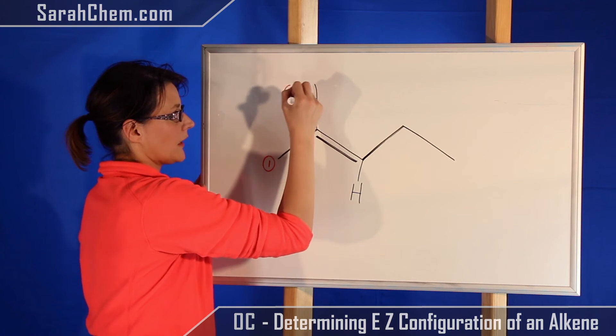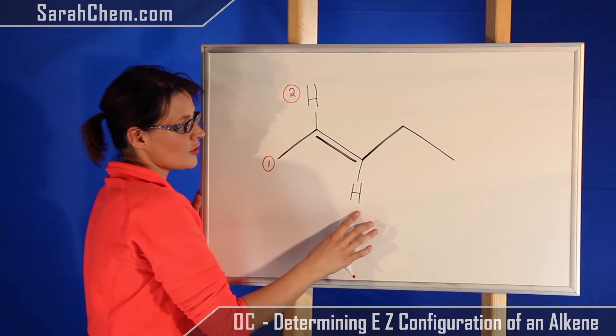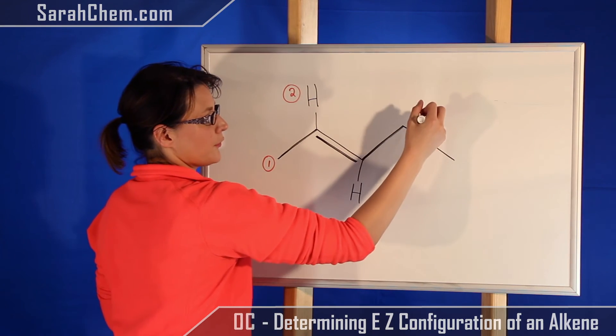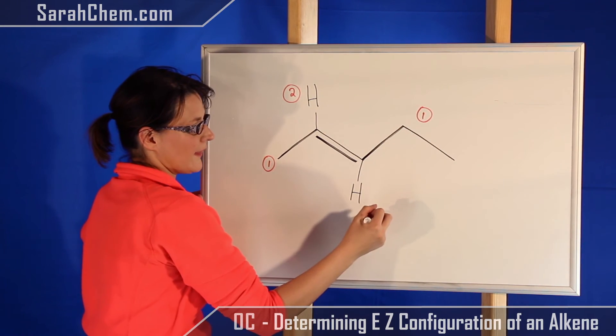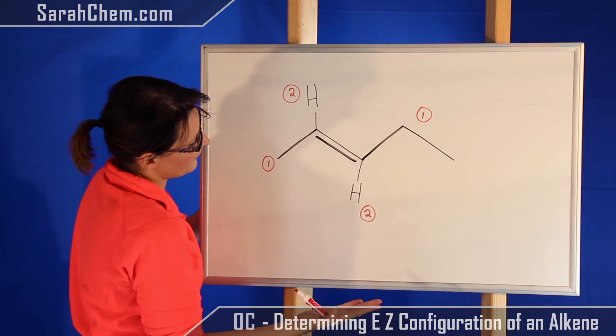one, this will be ranked two. And in this case here, a hydrogen would have lower priority than an ethyl group, so ethyl gets one and the hydrogen gets two.